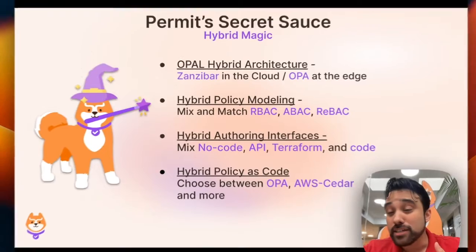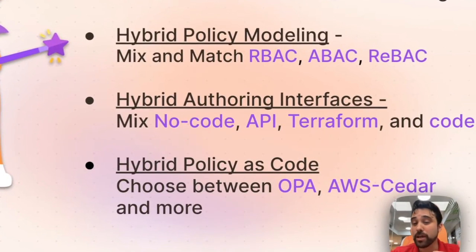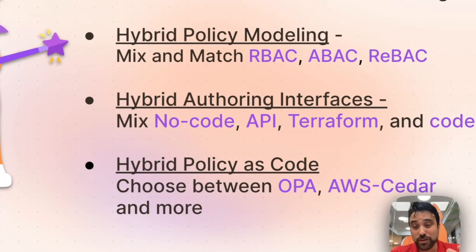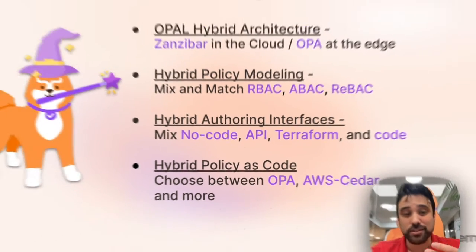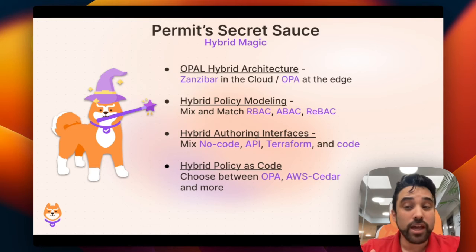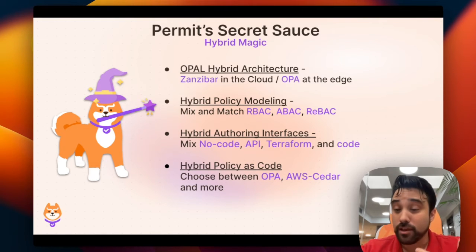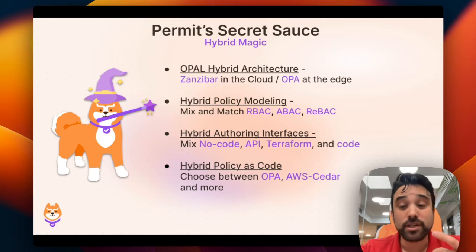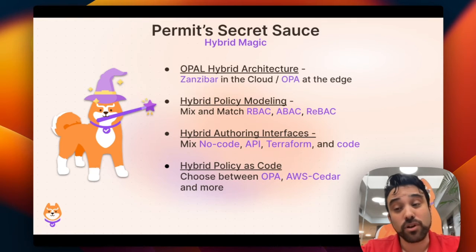Permit provides the right interfaces for different people — no-code, API, even infrastructure as code to generate your policy as code — and obviously using the different policy engines as you need. So if you're thinking about implementing fine-grained access control, you can definitely do it on your own and there are plenty of open-source solutions, but Permit can really save you a lot of time here. So please check it out.